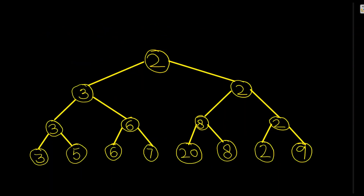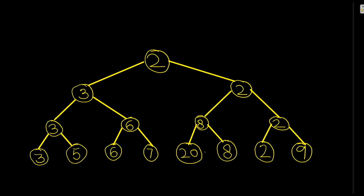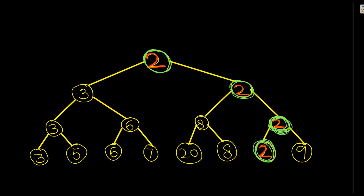Let's understand with another example. I have numbers in a binary tree and need to calculate the second minimum number. For this LeetCode question, I don't need to build the binary tree myself. Two is the minimum number, so I'll track from where it originates - I need to find the path. Going down, this is the location from where two originates.